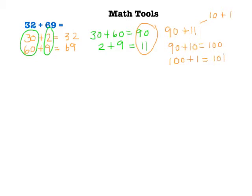Now I'm going to solve the problem by using base 10 shorthand. So to begin, I need to draw my numbers. 10, 20, 30, 1, 2. 10, 20, 30, 40, 50, 60. 1, 2, 3, 4, 5, 6, 7, 8, 9.